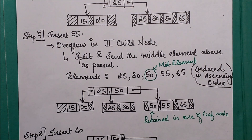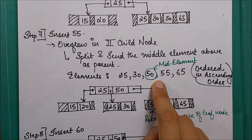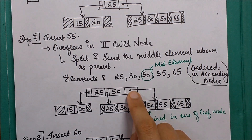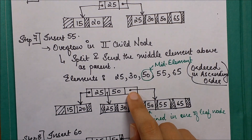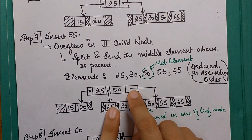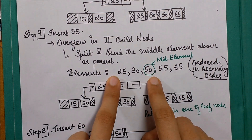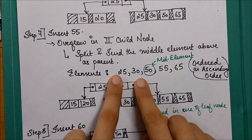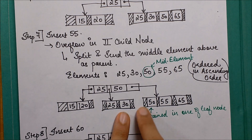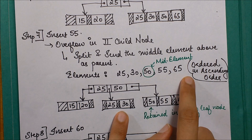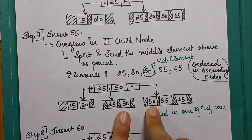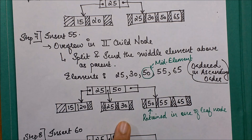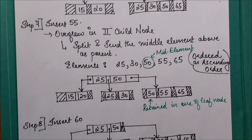Again we insert the elements, find the middle element, and move it to a higher level as the parent. Between 25 and 50 there is one element 30, and we also retain a copy of 25 — so there will be two elements 25 and 30. On the right-hand side of 50, you get all elements greater than 50, plus a copy of 50, since this is the last level.